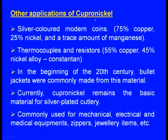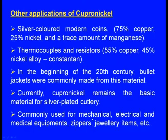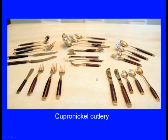Other applications of cupronickel: silver-colored modern coins (75% copper and 25% nickel with a trace amount of manganese); thermocouples and resistors using 55% copper, 45% nickel alloy (constantan); bullet jackets in the early 20th century. Currently, cupronickel remains the basic material for silver-plated cutlery and is commonly used for mechanical, electrical and medical equipment, zippers, jewelry items and so on. With this we are completing the copper alloys.